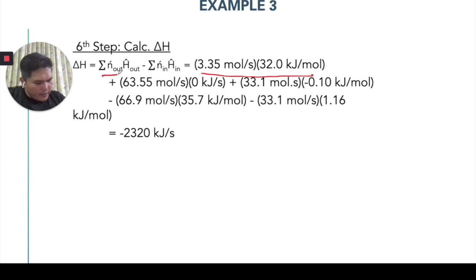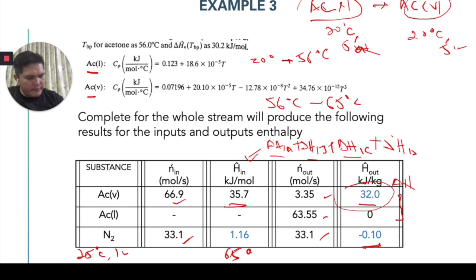You got the n_out h_out is actually which is given here. So, 3.35 multiply with 32, 63.55 multiply with 0 which is 0 plus 33.1 multiply with negative 0.1. So, you add up together and then you minus the product between 66.9 multiply with 35.7 plus 33.1 multiply with 1.16.